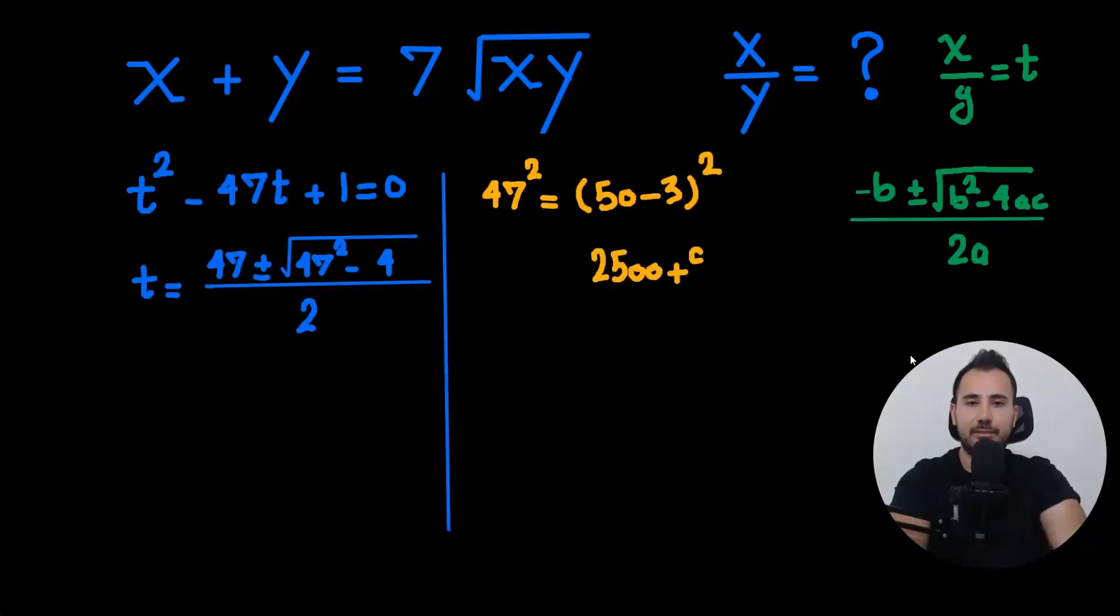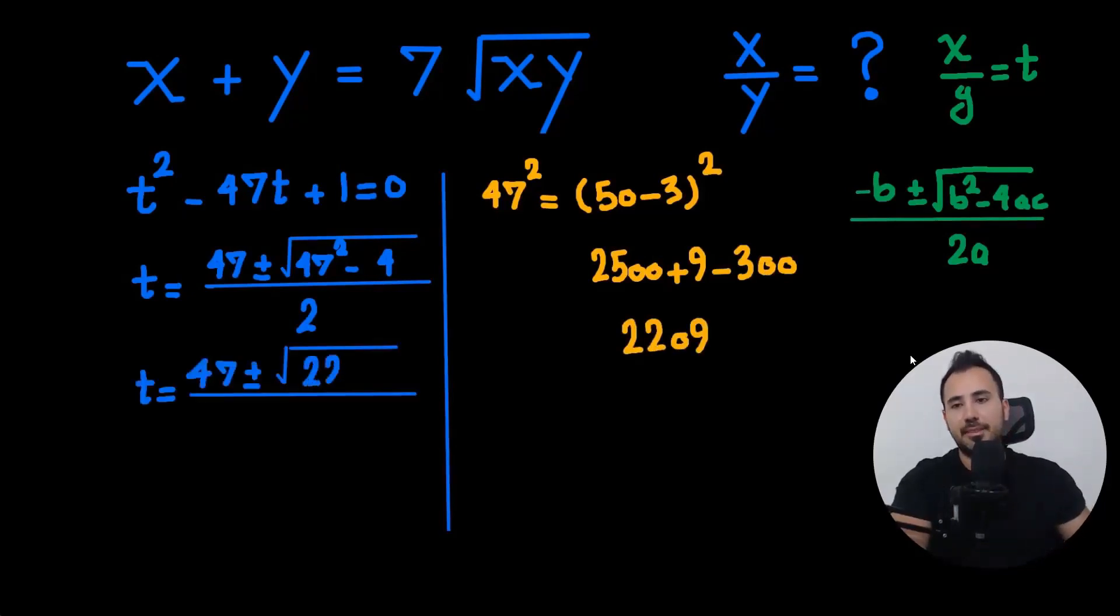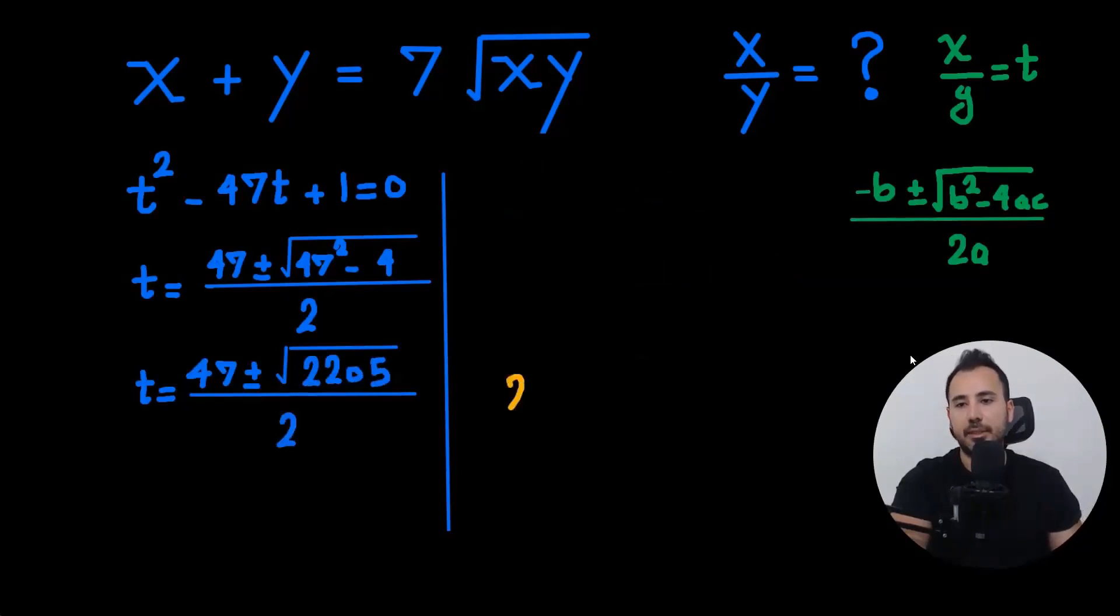50 squared is 2,500 plus 9, which is 3 squared minus 300. So that's the value for 47 squared, and we minus it by 4, so we're going to get 2,205.